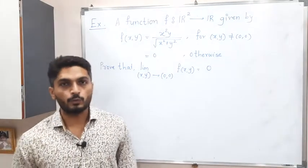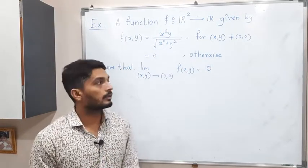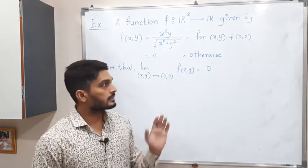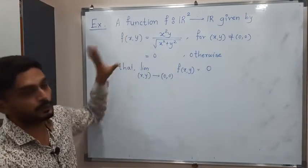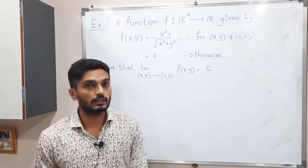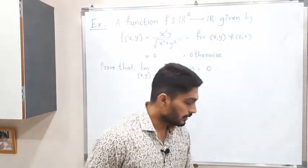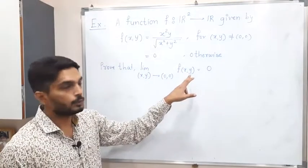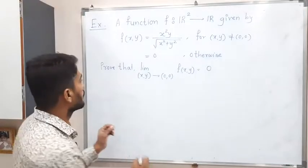Hi everyone. In this video we are going to solve this example — we have to prove something. In our last video we already saw an example of the same type, so let us discuss this example also. We have a given function f(x, y) equal to this one. What we have to prove is that zero is the limit of f at the point (0, 0).